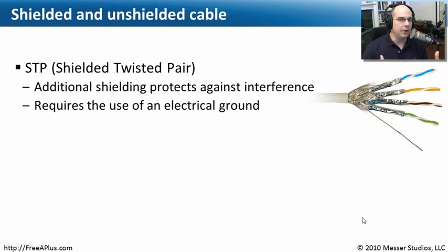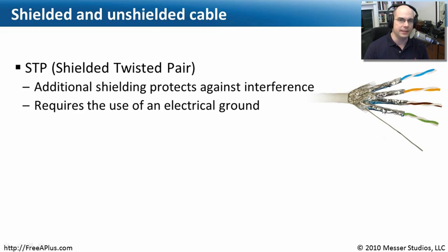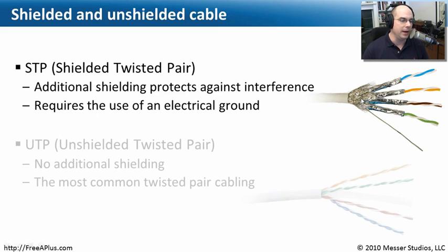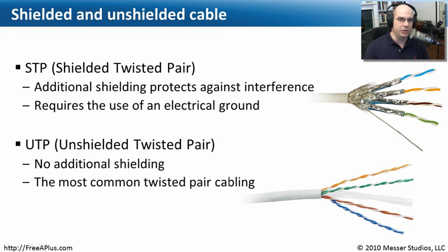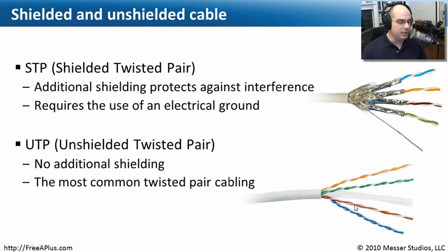If you're in an industrial environment or one where there is a lot of interference, you may want to consider using something called an STP cable, a shielded twisted pair. That means you have the twisted pair in your cable, but there's also shielding on it to protect against additional interference. Because you have that shielding, you're also going to need to ground this cable, so there are extra connectors on the shield to connect it to a common ground. Most networking cable, though, is unshielded — we have the twists in the cable to handle interference, there is no metal shielding, and you don't have to worry about a ground. You simply put your connector on the end and plug it in, and unshielded twisted pair works just fine for the vast majority of network configurations.